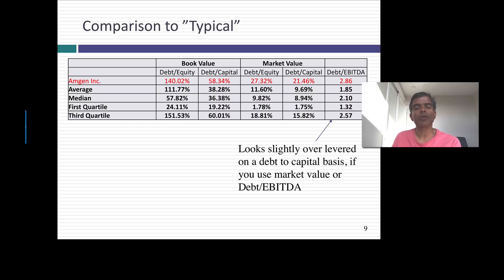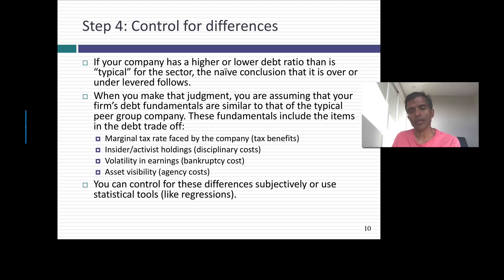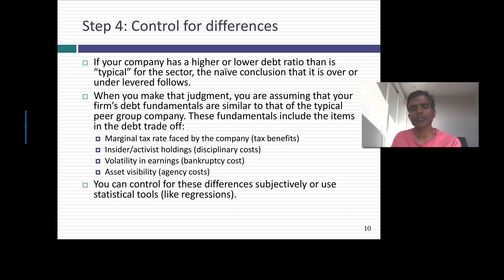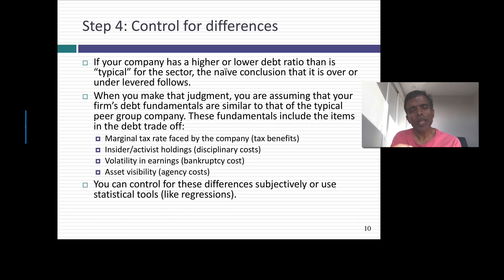Most analysts would stop here, and most CFOs stop here, but I think there's a fourth step you can take. We know that comparing to the average or the median is a shortcut — we're assuming the company we're analyzing is very similar to the typical company in the sector in its fundamentals: the tax rate it faces, its variance in earnings and cash flows. And we know that's not true. If you can somehow control for differences in tax rates and volatility of earnings or observability of assets — the trade-offs we talked about with debt — we'll have a much better answer. There are two ways to control for differences: qualitative storytelling and statistics.